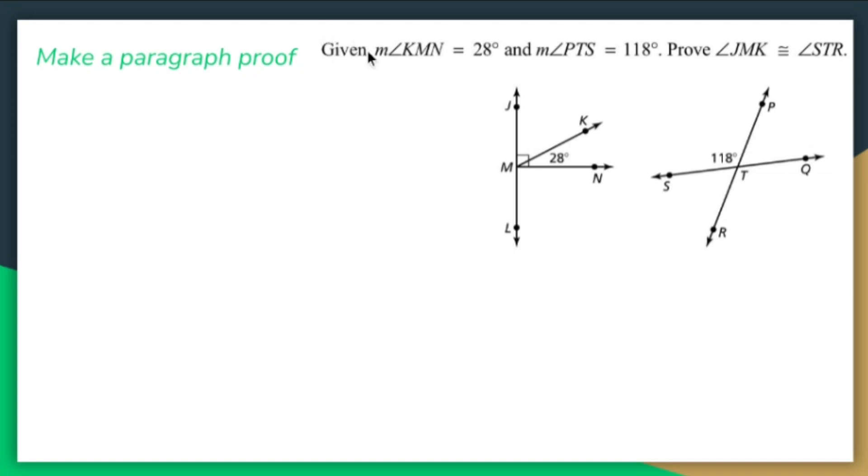All right, so what do we have? We have given KMN, KMN is 28 degrees. We're also given the fact that PTS is 118. I have to prove that JMK, the angle of this guy right here, is congruent to angle STR, which is this angle right here. So I have to show that these guys are congruent by using numbers like 28 and 118.